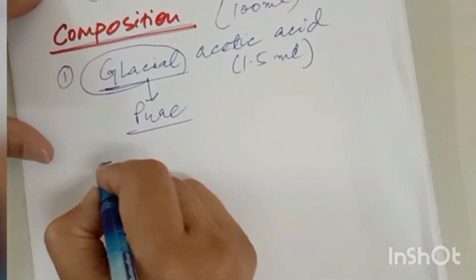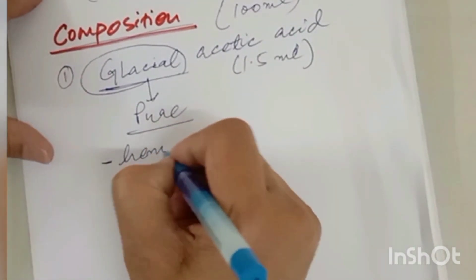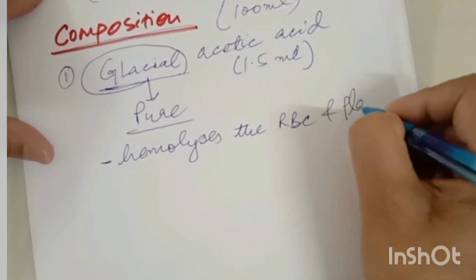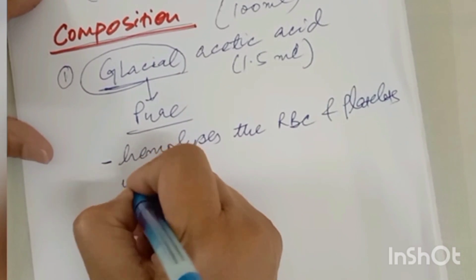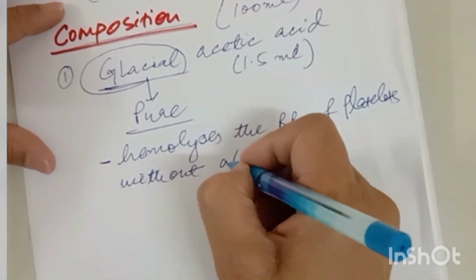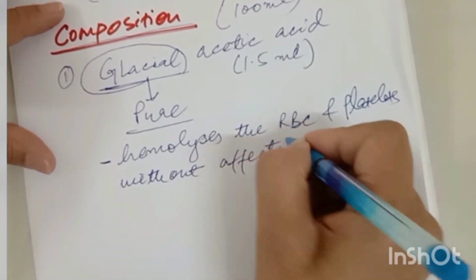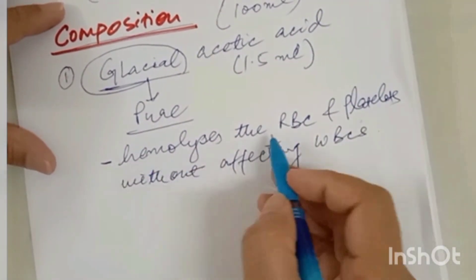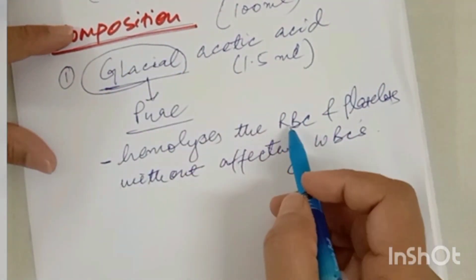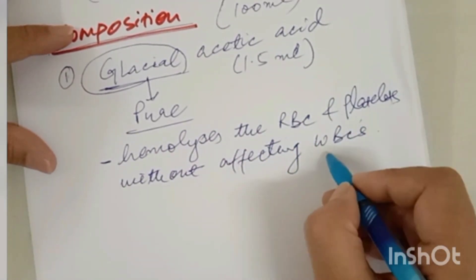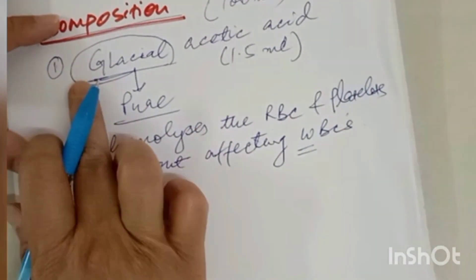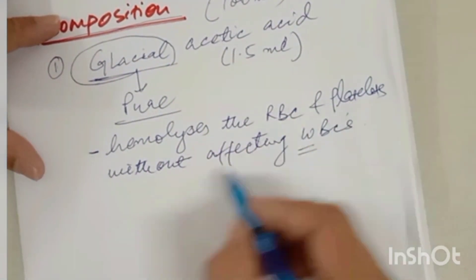Glacial acetic acid hemolyzes the RBCs and platelets without affecting the WBCs. So what does it do? Glacial acetic acid lyses the RBCs and platelets. It hemolyzes them without affecting the WBCs — because we are doing the WBC count, it must not affect the WBCs.